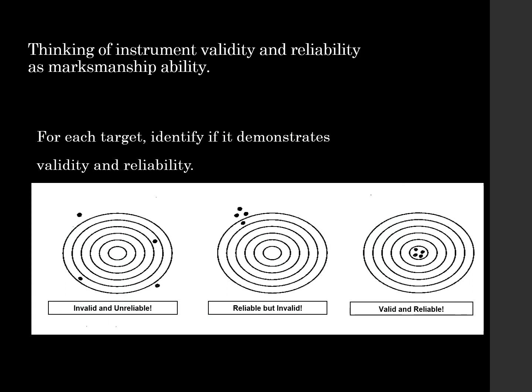Here's a good example when we talk about validity and reliability using targets. For the first target, we have four shots and they're all over the place — so our data are not valid or reliable. The next target shows a grouping of four marks in the top left. Because they're close together it's reliable, but it's not valid because we're not hitting the bullseye.